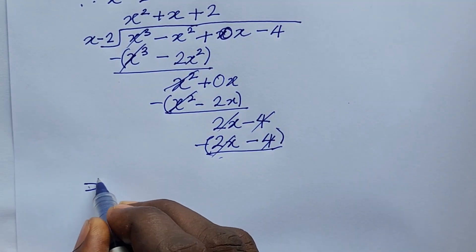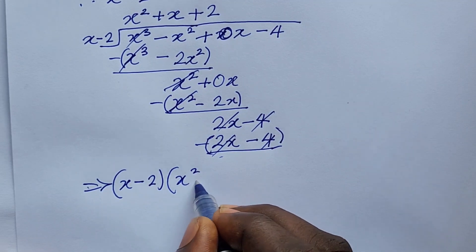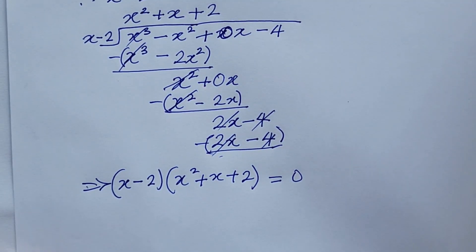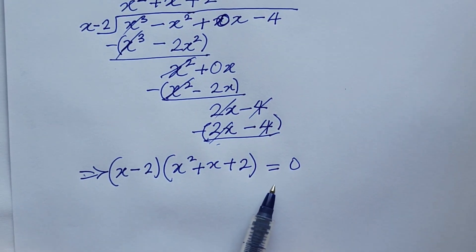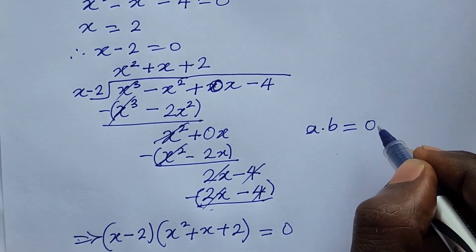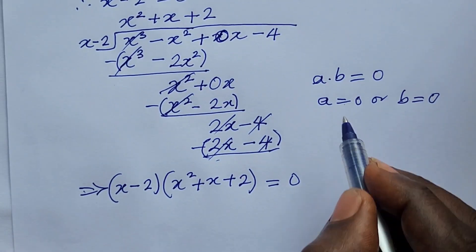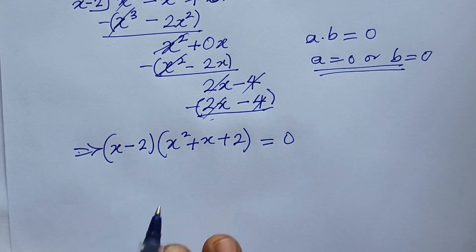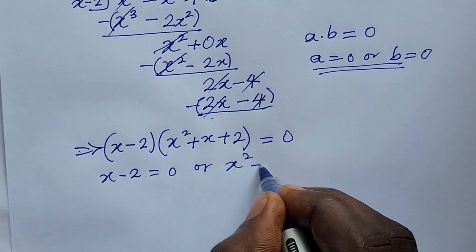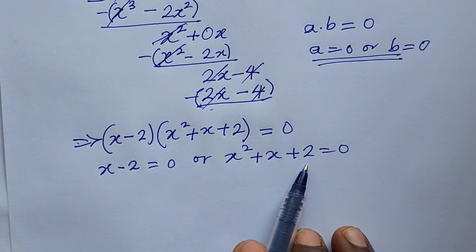So our quotient is x squared plus x plus 2. This means that multiplying x minus 2 by x squared plus x plus 2 equals 0. From this expression we now apply what we call the zero product rule, which says that if a times b equals 0, then a equals 0 or b equals 0. Applying this rule, we get x minus 2 equals 0, or x squared plus x plus 2 equals 0.